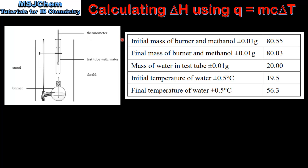Here we have the data that we are going to use to calculate the enthalpy change. We have the initial mass of the burner and the methanol, the final mass of the burner and the methanol, the mass of water in the test tube, the initial temperature of the water, and the final temperature of the water.